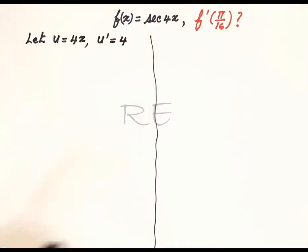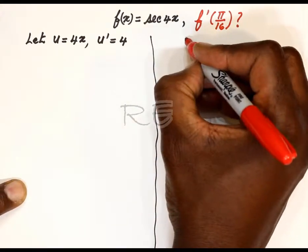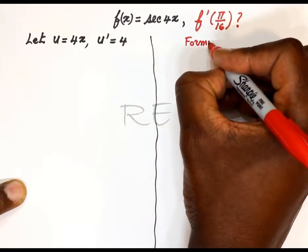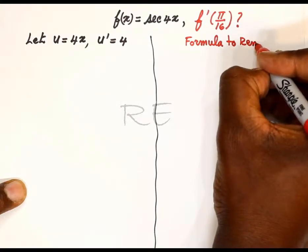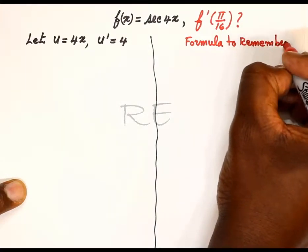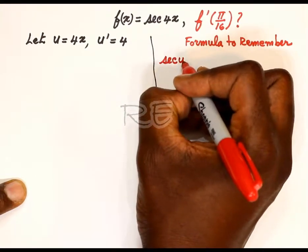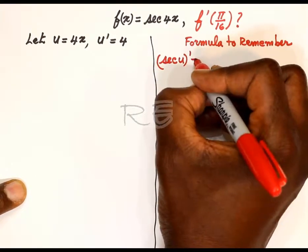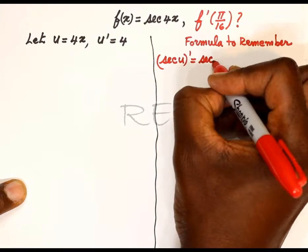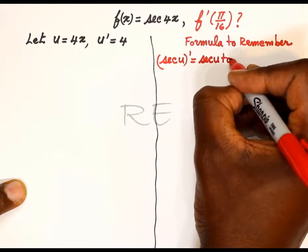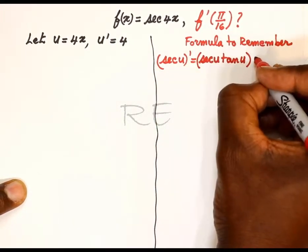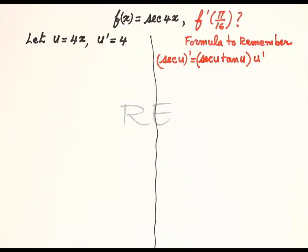Therefore u prime is the derivative of 4x, which is 4. We need to remember the formula for the derivative of secant u, and the derivative of secant u is equal to secant u times tan u, the whole thing multiplied by u prime.